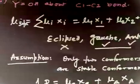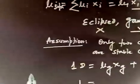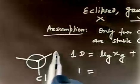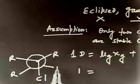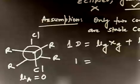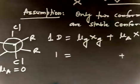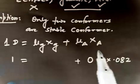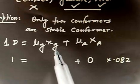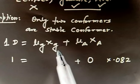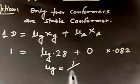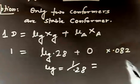For the anti conformer, the dipole moment will be 0. If you have a structure like CL-R-R anti to each other, this side and that side cancel, so the total dipole moment for anti conformer is 0. Since the total mole fraction must equal 1, the gauche mole fraction is 0.28. Therefore mu_gauche = 1 divided by 0.28, which comes out to be 3.57 Debye.